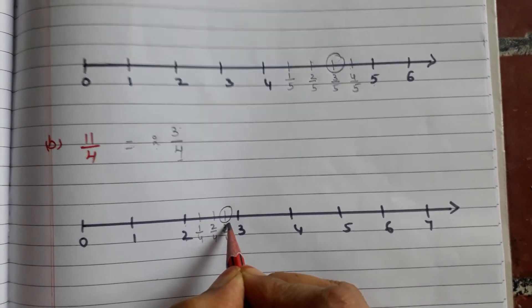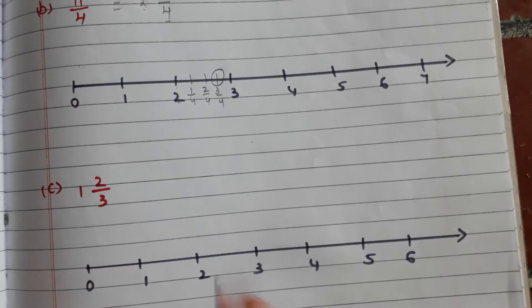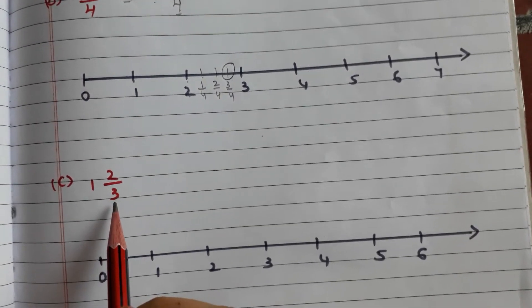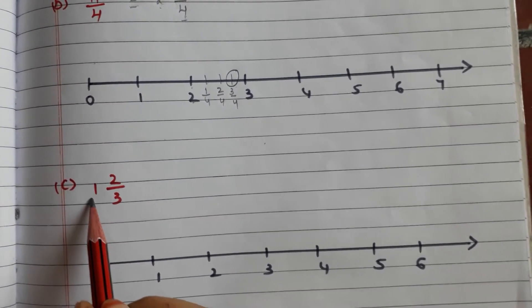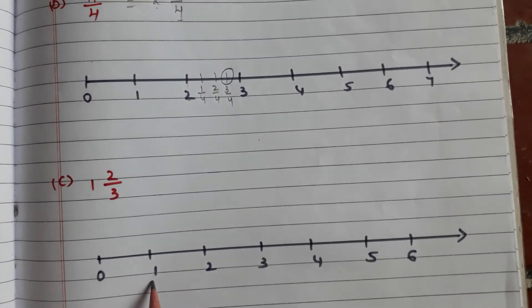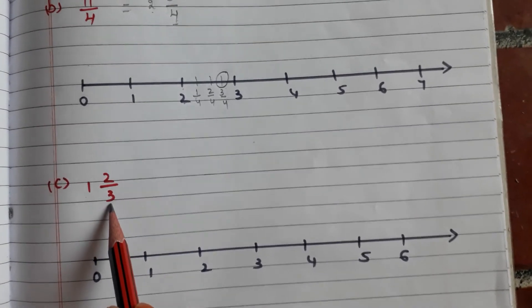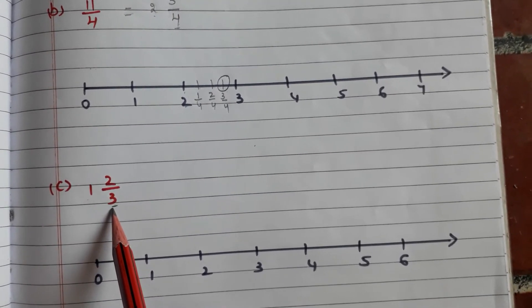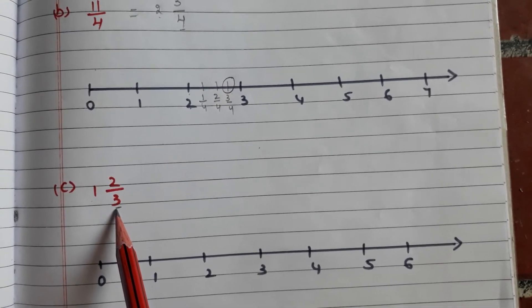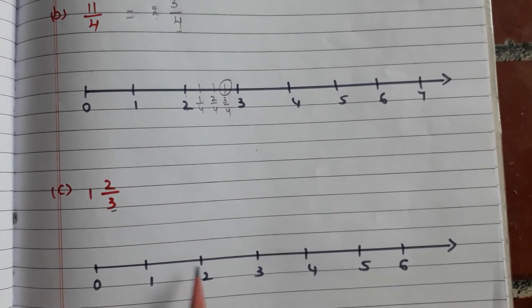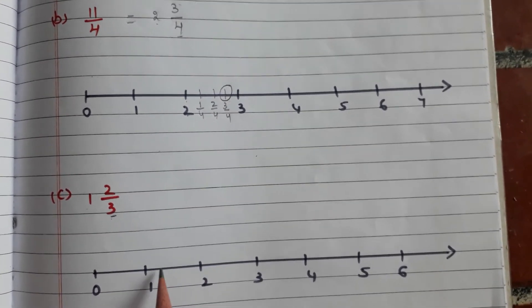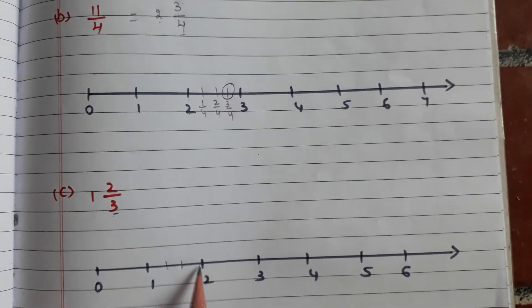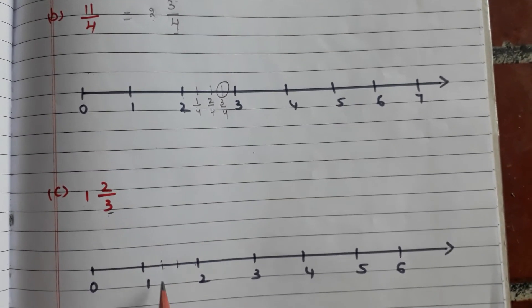Okay, let us go to the last example: 1 2/3. First we have to place the whole number 1, so here is 1. In 2/3 the denominator is 3, so we have to make 3 equal parts between 1 and 2: 1, 2, and this is the third part.